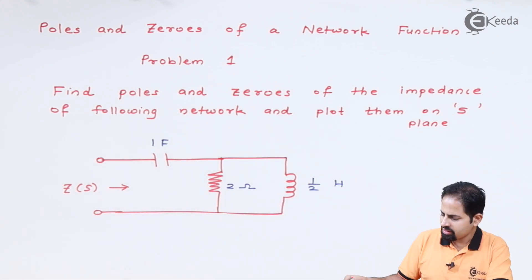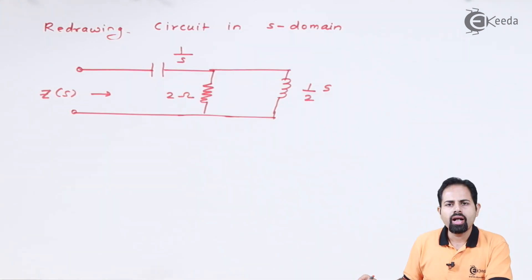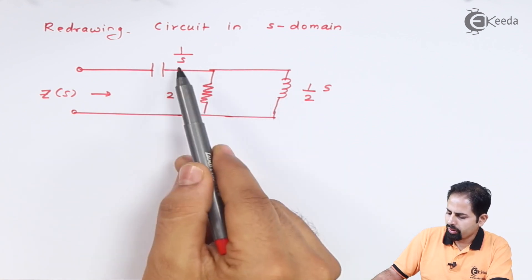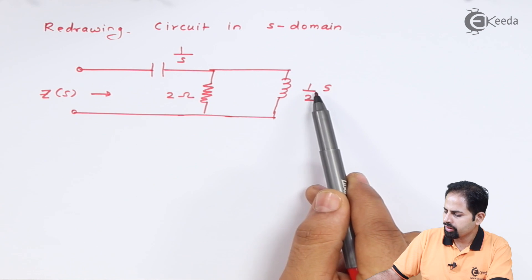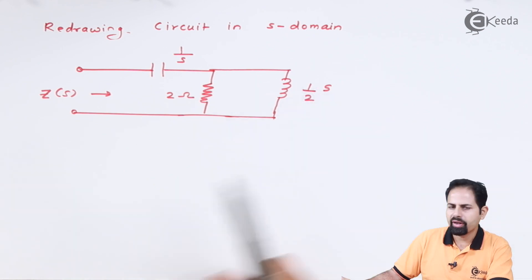Let us redraw this circuit in s-domain. Capacitor is replaced with 1/s, inductor with s·L that is s/2, and resistance is unaffected.